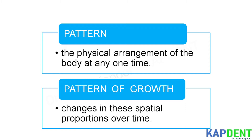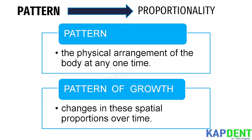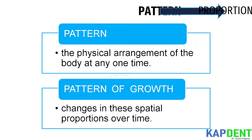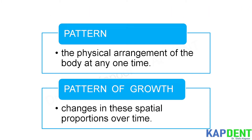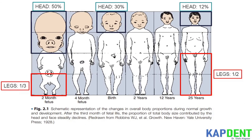Growth and development follow a pattern which is considered normal. Pattern in general sense means proportionality. Therefore, there exists a pattern of spatial arrangement of the body parts, while a change in these spatial proportions represents a pattern of growth. Now have a look at this figure which illustrates the change in overall body proportion that occurs during normal growth and development.